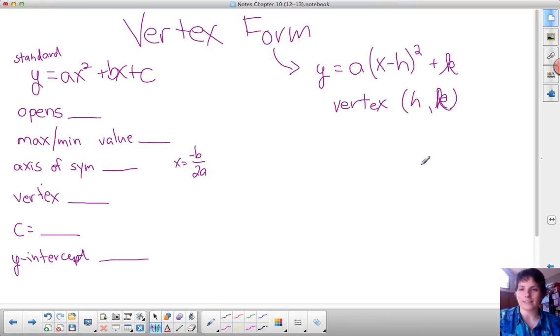Now be cautious, because the formula has a subtraction inside parenthesis. When we write this x value of the vertex, we need to take the opposite of what we see.